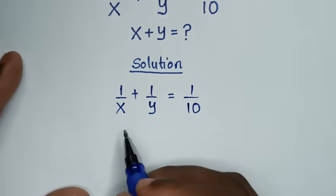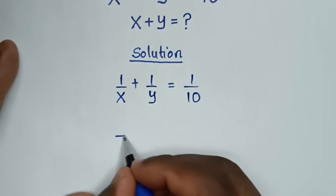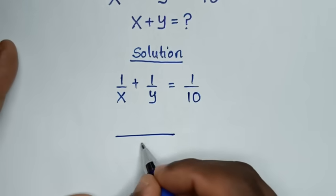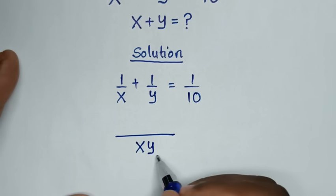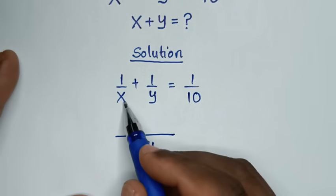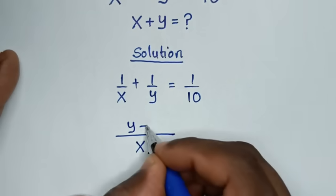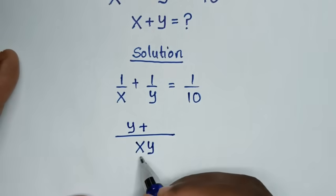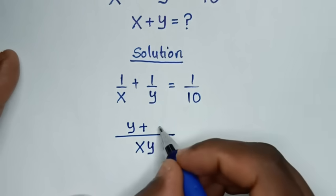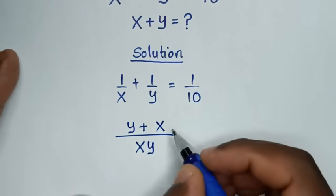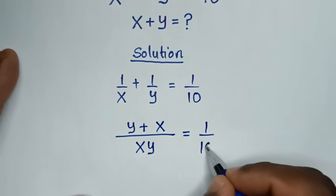The LCM of x and y is xy. So the left side becomes: xy over xy, which gives y plus x over xy. That simplifies to y plus x over xy, and this is equal to 1 over 10.